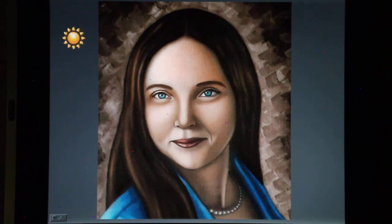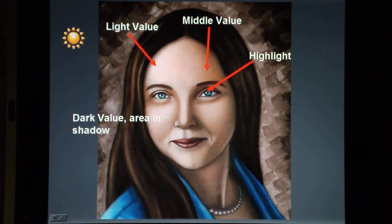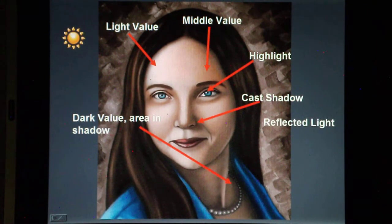Light is coming from the top left corner. Highlights are often seen in the eyes and lips. Light values are produced in the areas facing the light source. Areas progressing and facing away from the light source produce middle value, and then dark values. Also, the nose casts a shadow, and the reflected light by surrounding objects is visible on the face of the sitter.